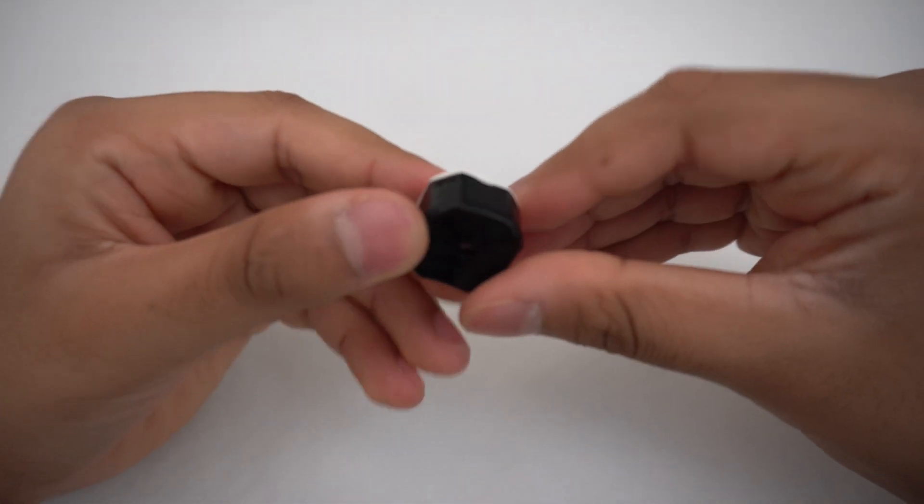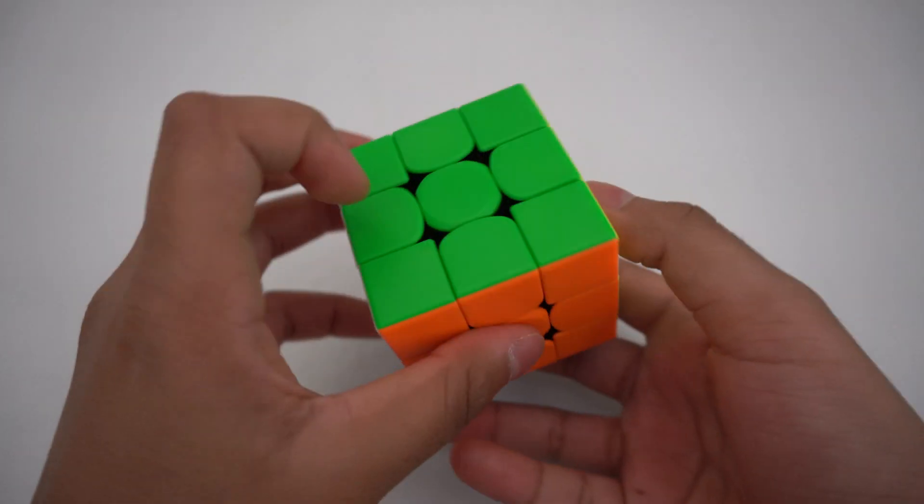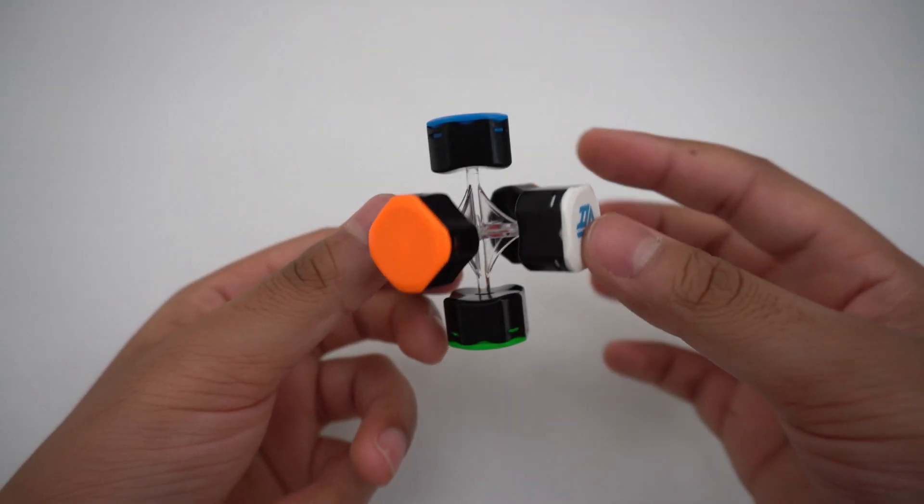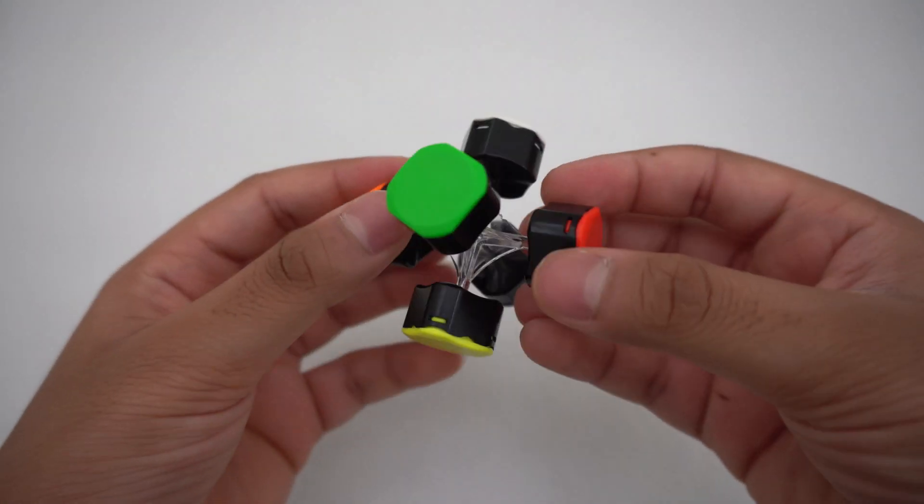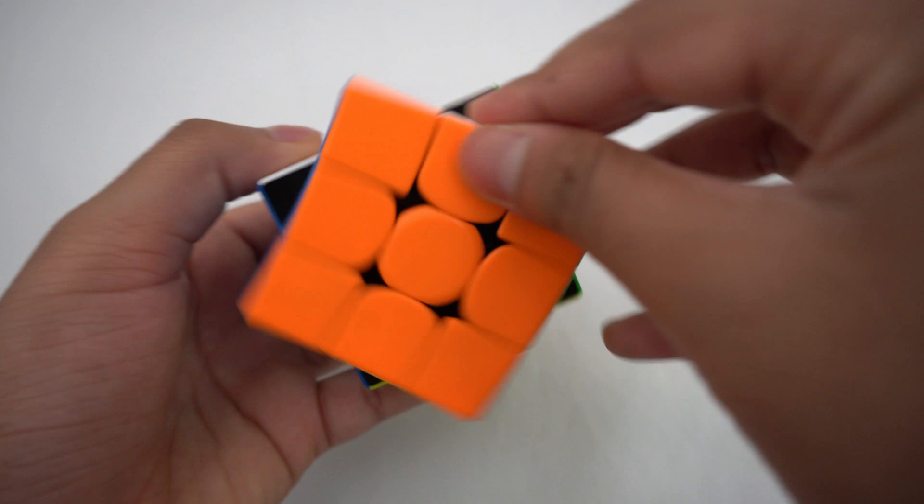First is the centerpiece. The centerpiece is a piece in the middle of every face of the cube. The centerpiece is fixed into the cube, so it will always be where it started. Next is the edge piece.